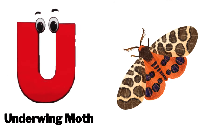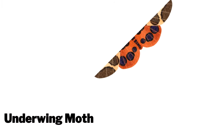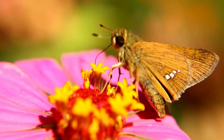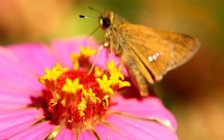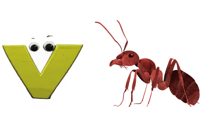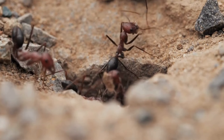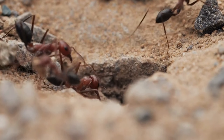U is for Underwing Moth. U. Underwing Moth. V is for Velvet Ant. V. Velvet Ant.